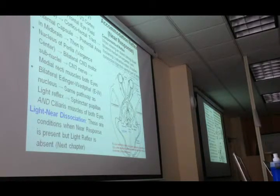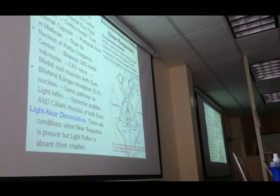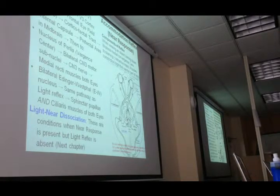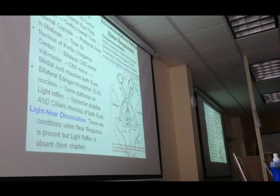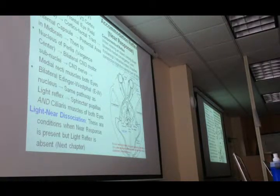The corneal, or blink, reflex is another brainstem reflex. With a wisp of cotton, you lightly touch the cornea from the lateral aspect while the person looks up and inward. That side blinks and the opposite side also blinks — it is a protective reflex. The afferent is CNV1 going to the spinal nucleus of the trigeminal nerve, which receives pain, temperature, and light touch from the cornea.